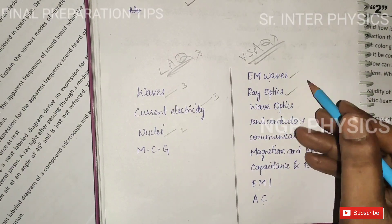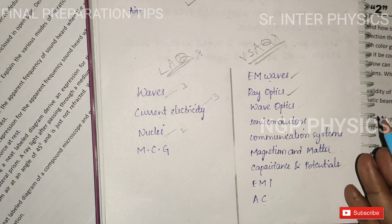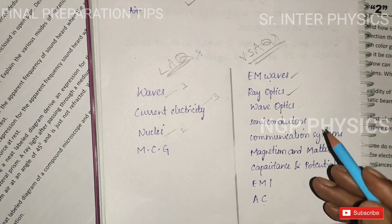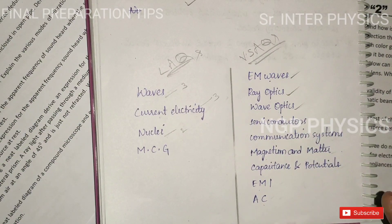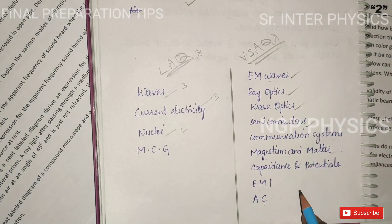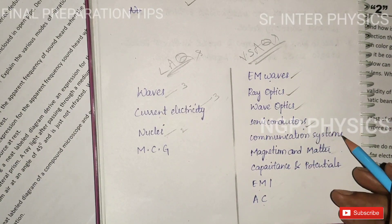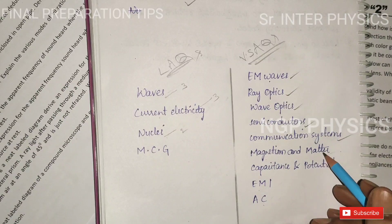Other than this is Ray Optics: myopia, hypermetropia. We have the relation R equals 2f. It is like Wave Optics — Brewster's law, Malus's law. These questions are similar. Other than that: semiconductors, communication systems, and atomic matter.